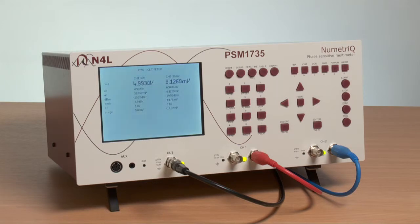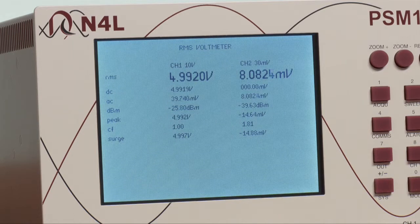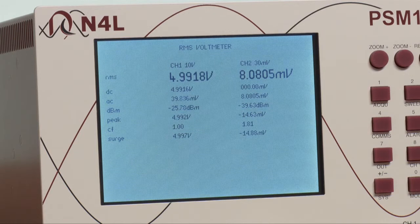The PSM 1735 is a true wideband RMS instrument, so we have AC, DC, dBm peak, crest factor, and surge measured for both channels. The channels can be voltage measurements, which is the default mode, or become current by virtue of shunts for different applications. In this case, however, we are just looking at voltage.